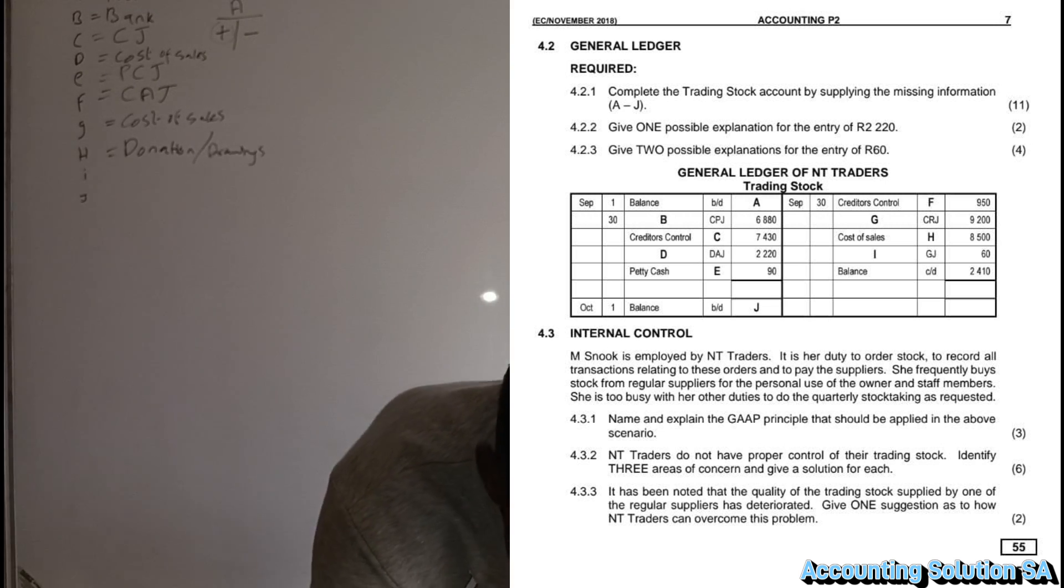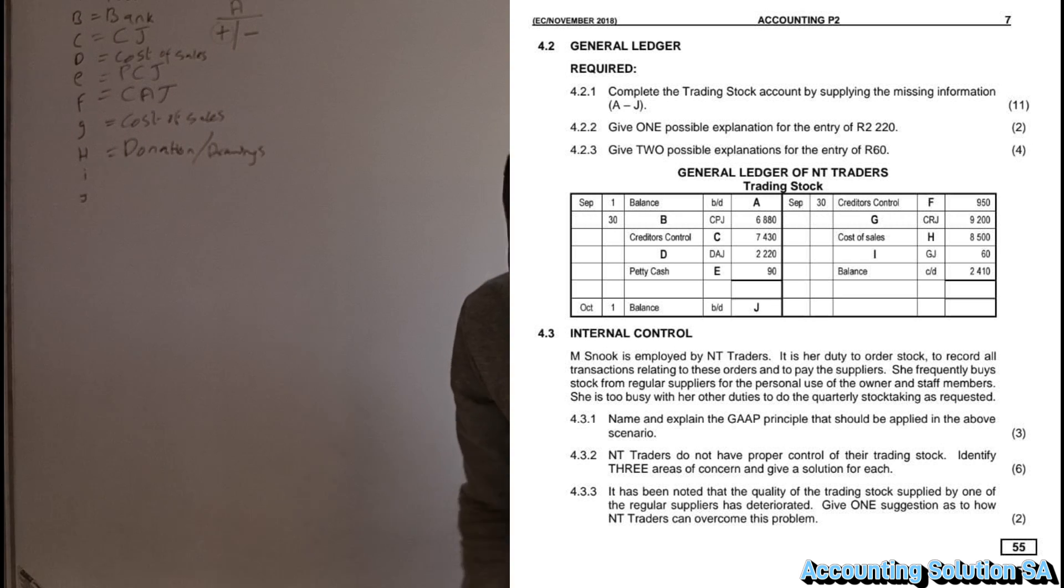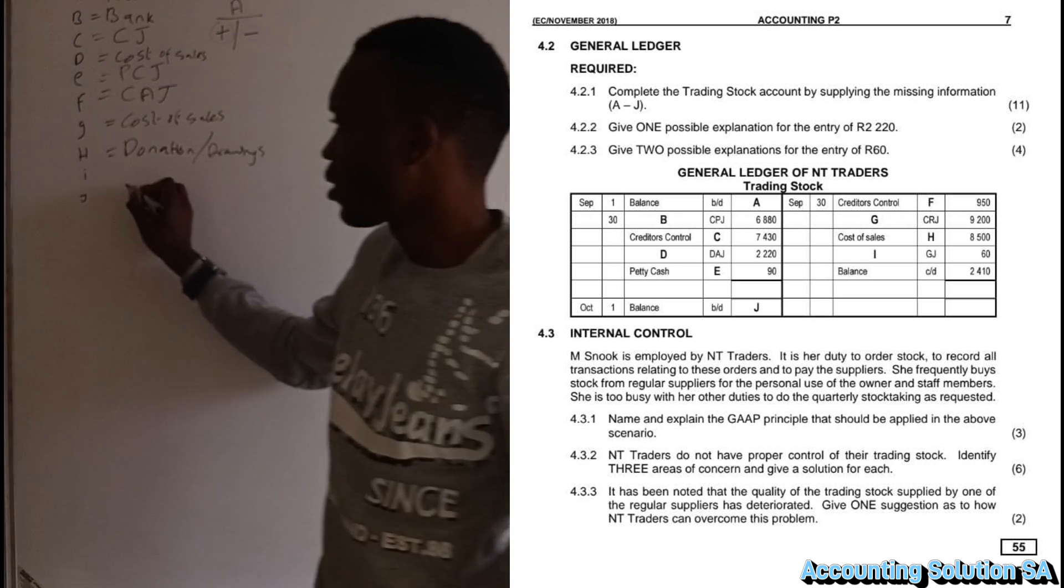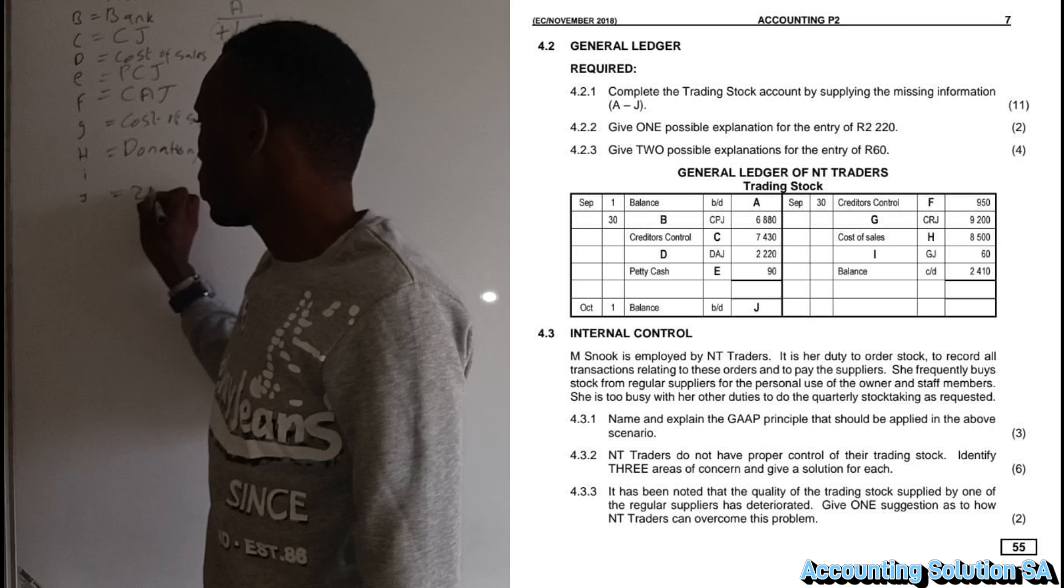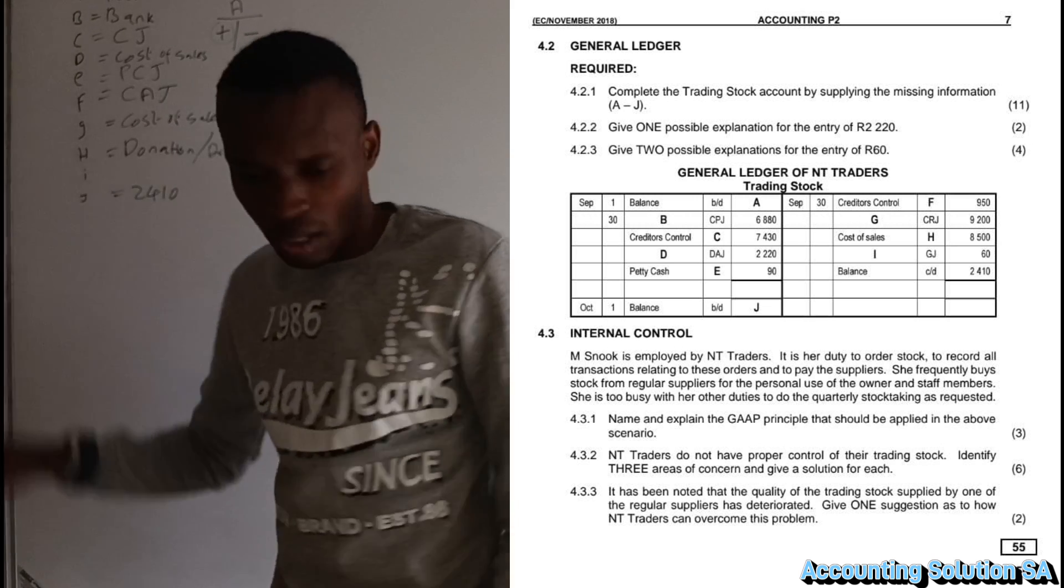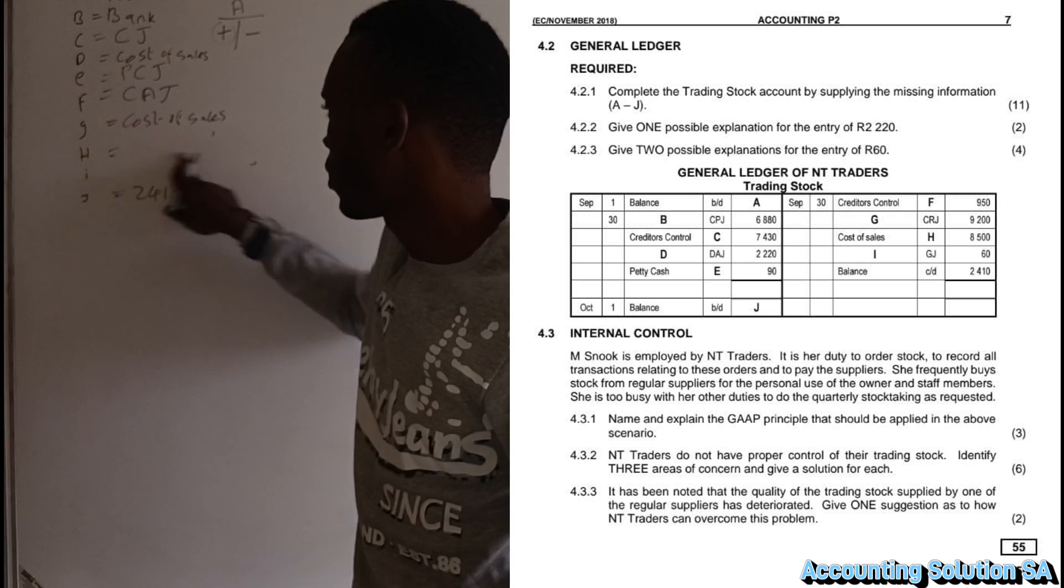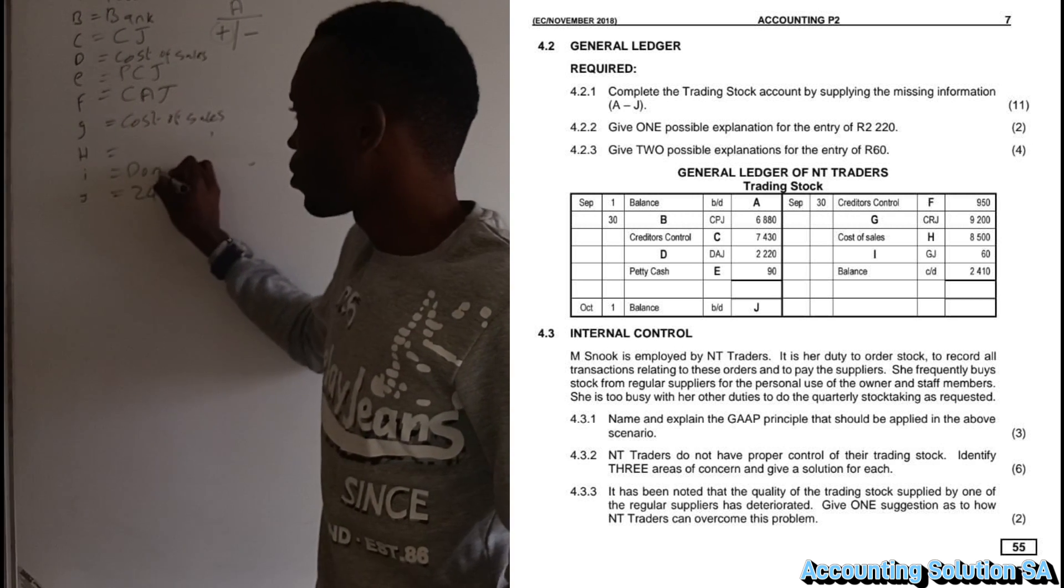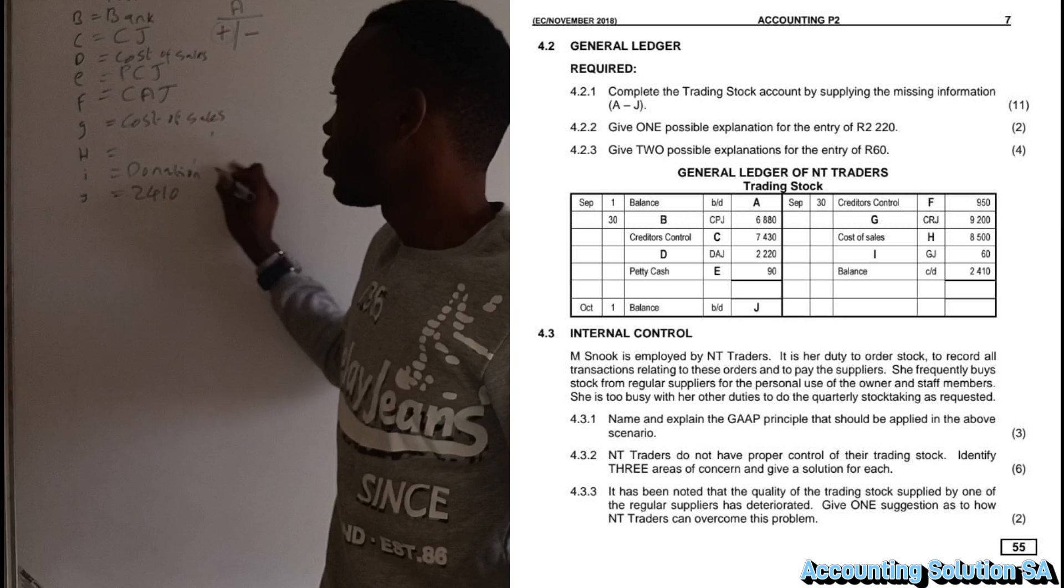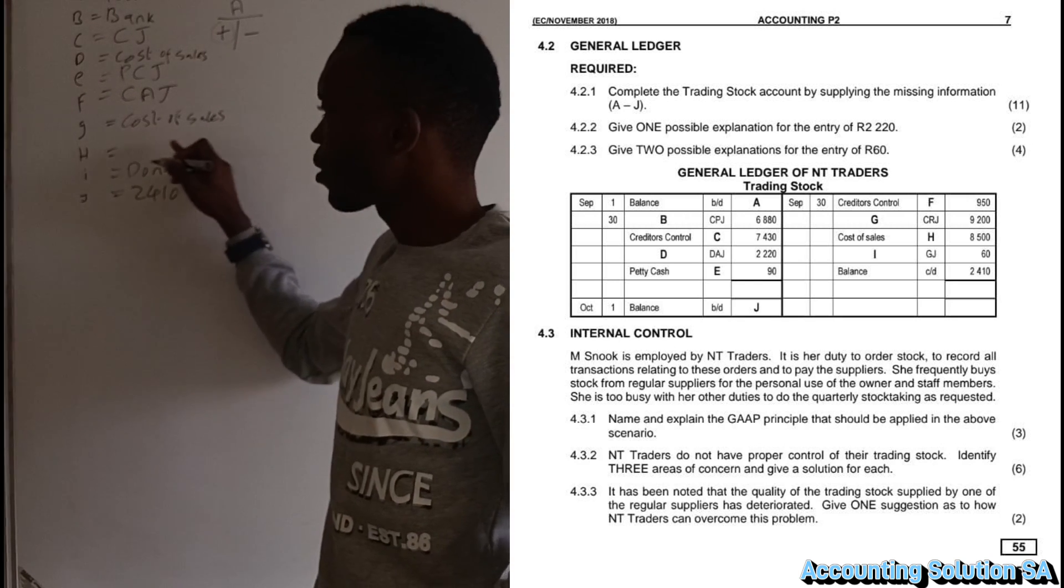Let's proceed to number J. Number J, if you can check, is balance brought down. This is the closing balance that we close off on the credit side, amount of 2,410. Where did I miss number I? Number I was supposed to be donation. And the other one, number H, cost of sales. Number H was supposed to be debtor's journal to indicate that someone purchased on credit.